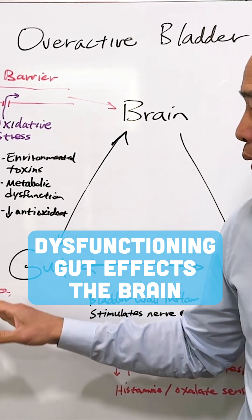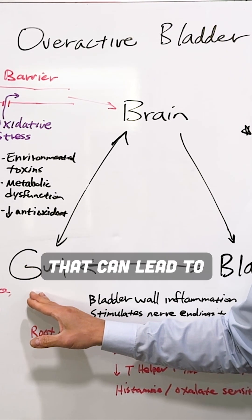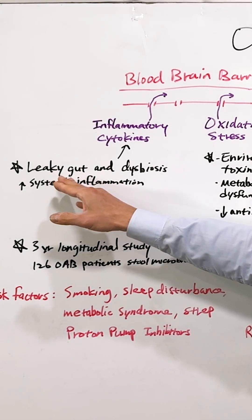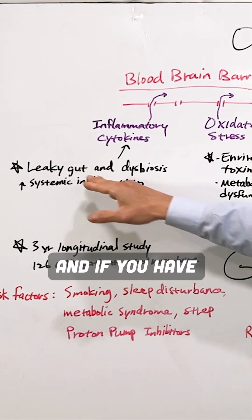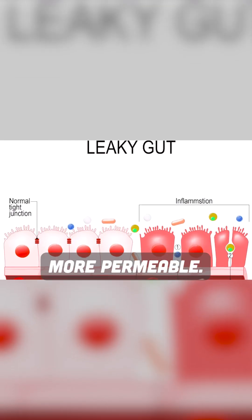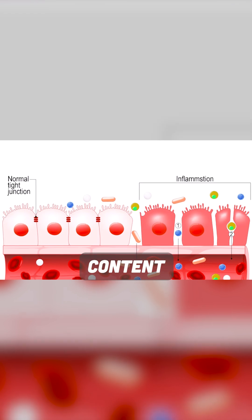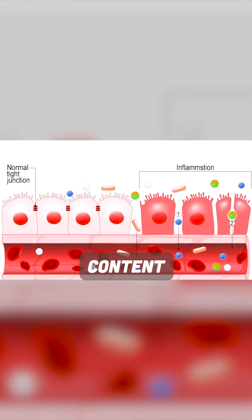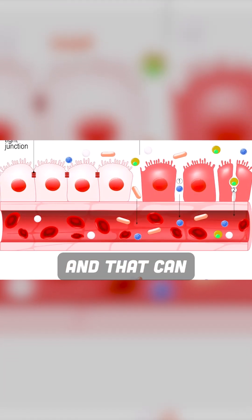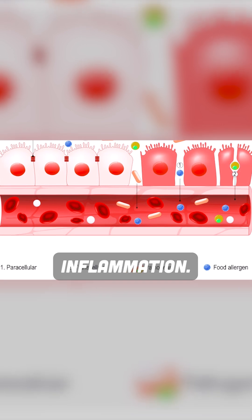When the gut is dysfunctioning, that can lead to leaky gut. And if you have leaky gut, then the intestinal lining becomes more permeable, so microbial content and food particles can leak out of the leaky gut, and that can cause systemic inflammation.